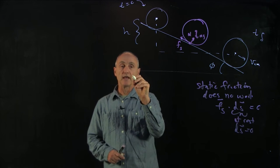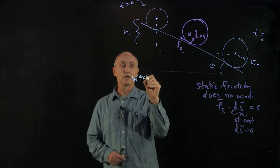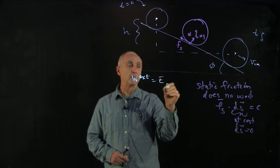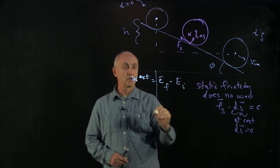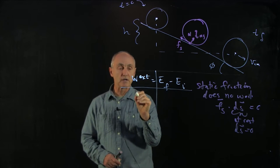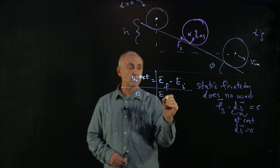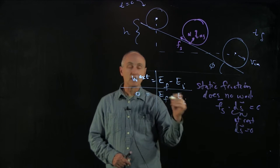So our static friction does no work. And therefore, from our energy principle, that the external work equals E final minus E initial, we have no external work. And so our energy is constant.